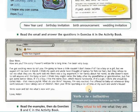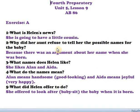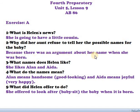Now let's go to the activity book, page 86, exercise A — five questions. Question one: What is Helen's news? She's going to have a little cousin. Question two: Why did her aunt refuse to tell her the possible names for the baby? Because there was an argument about her name when she was born.